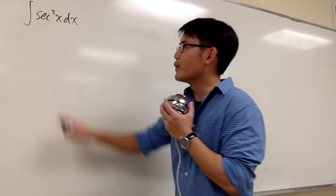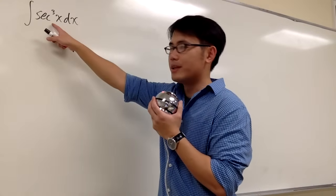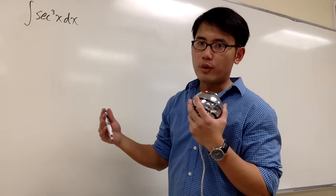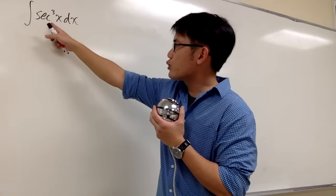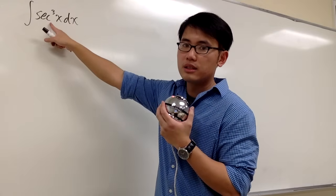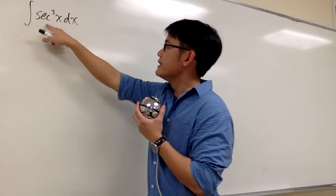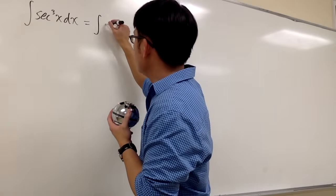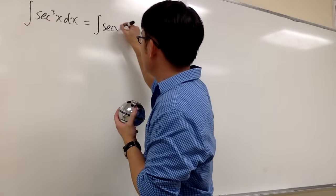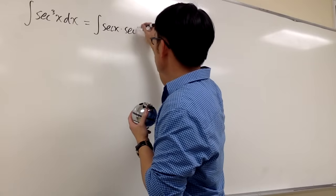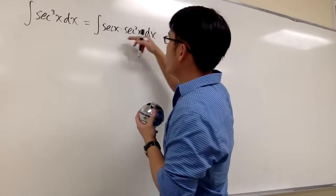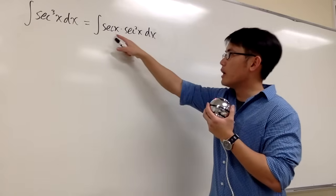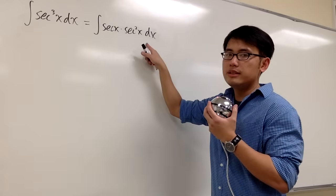Let's talk about how we can integrate secant to the third power x. Whenever we're dealing with high powers of trig functions, let's try to break this apart. Especially since this is secant to the third power x, we can look at this as the integral of secant x times secant squared x dx. Now let's talk about how we can integrate this expression.